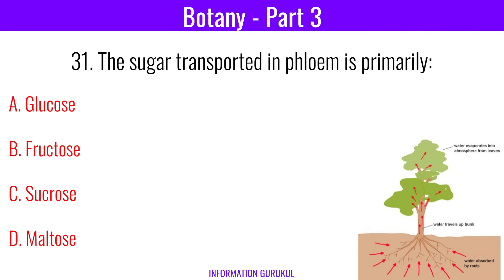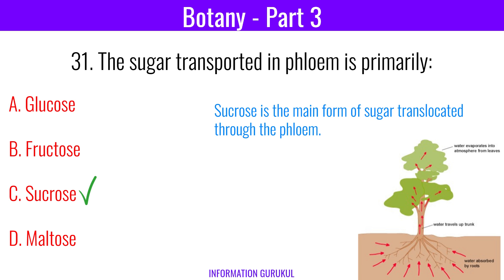The sugar transported in phloem is primarily? Sucrose. Sucrose is the main form of sugar translocated through the phloem.